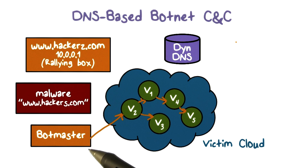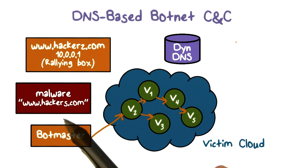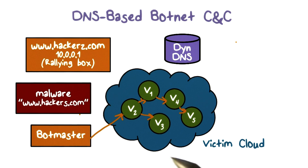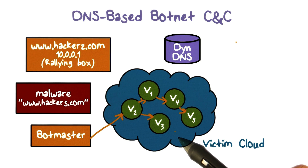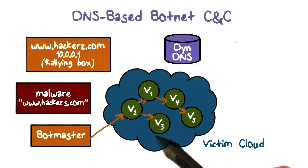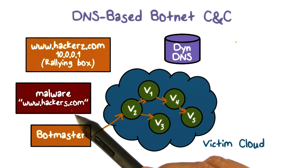In this example, the bot master releases malware, and in the malware, the domain name of the C&C server is hardcoded. Now the malware spreads. The question is, how do the bots communicate back to the bot master? In other words, how do they perform C&C with the C&C server?